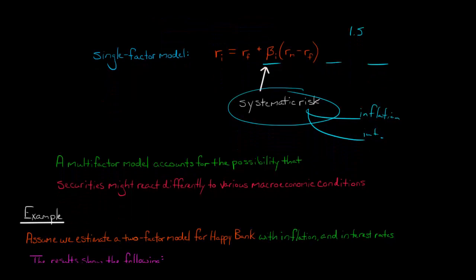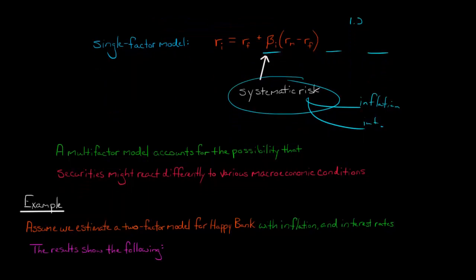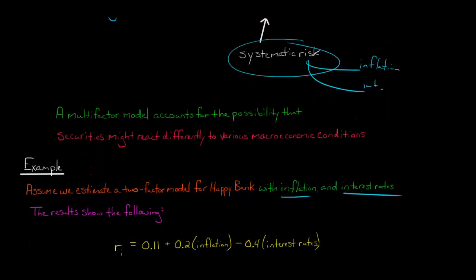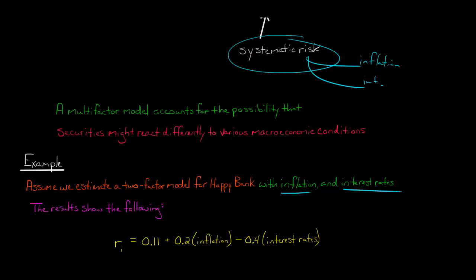So I want to give you just an easy example. Let's say that we are going to estimate a two-factor model for a fictional company called Happy Bank. And our two factors, we're going to make this really simple. We're just going to have inflation and interest rates. Those will be the only two factors in the model. And so we go and we estimate the model with regression analysis, and we get the following result.